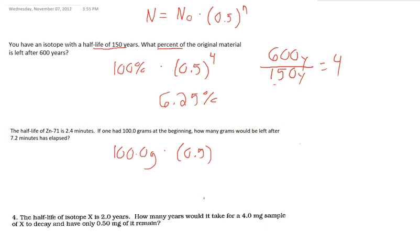Now we need to know how many half-lives have passed. Well, we know that a total of 7.2 minutes has passed and we know that one half-life is 2.4 minutes. So, that gives us three half-lives that have gone by.